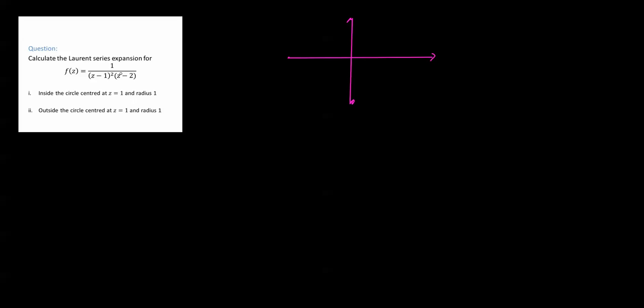The first thing we're going to do is locate the singularities. There's a singularity at z equal to positive 1, and there's a singularity at z equal to positive 2. Now, we also need to draw the region that we want to find the expansion in — that's inside the circle centered at z equal 1 of radius 1, so it's going to touch the imaginary axis there, and go through that other singularity, and come back. So, we need to find the expansion inside the circle.